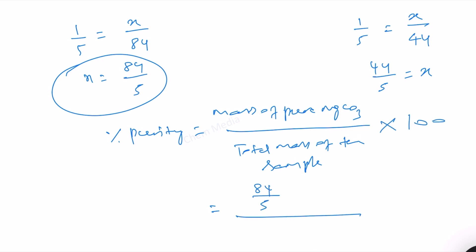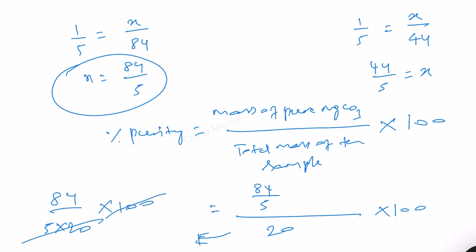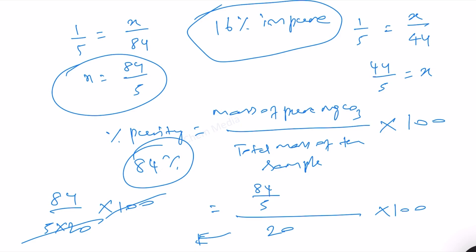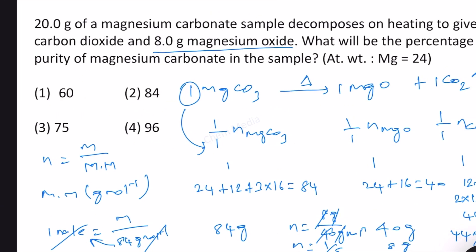This simplifies to 84 / (5 × 20) × 100 = 84 percent. That means 16 percent is impure. Whenever a sample is impure, the weight increases. If the sample were 100% pure, the total mass would have been 84/5 = 16.8 grams. Since impurity increases mass beyond 16.8g to 20g, option 2 (84%) is correct.